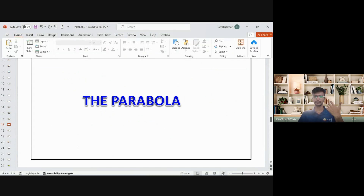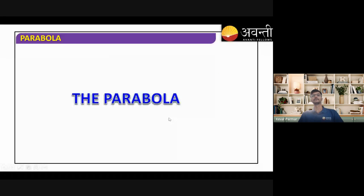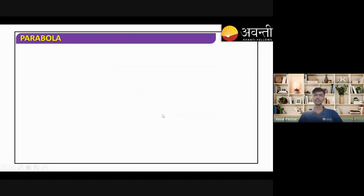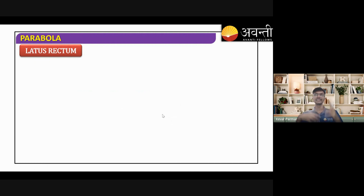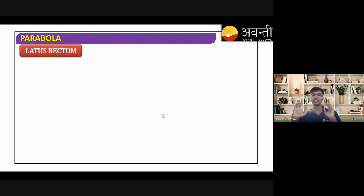The next topic we are going to do is the latus rectum. The latus rectum is a very, very important part of the parabola. It basically helps us determine how widely open or closed the parabola is. We have already defined the latus rectum, I hope you know its definition.